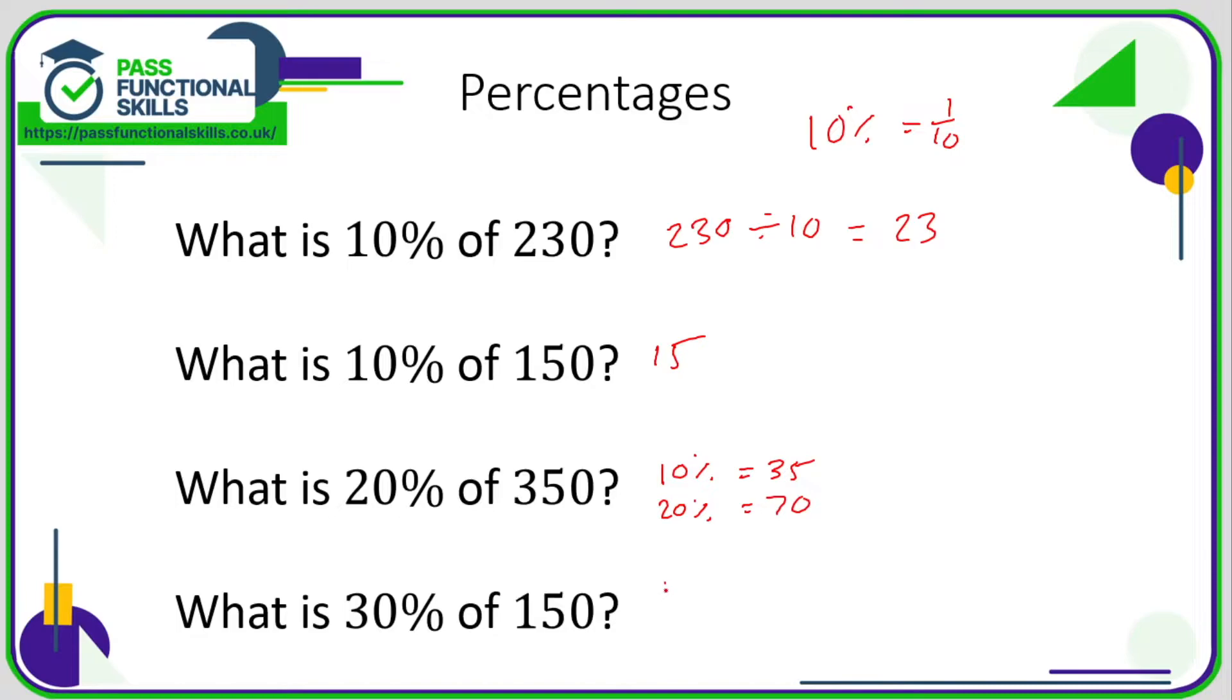For 30%, we'll work out 10% first. 10% of 150 is 15, so what's 30%? Well, 30% is three times greater than 10%, so the answer will be three times greater than 15, which is 45.